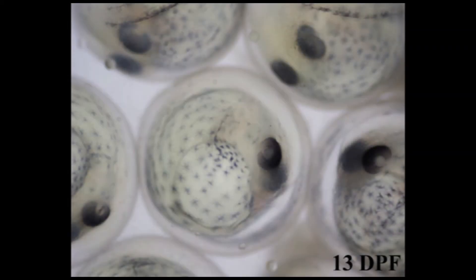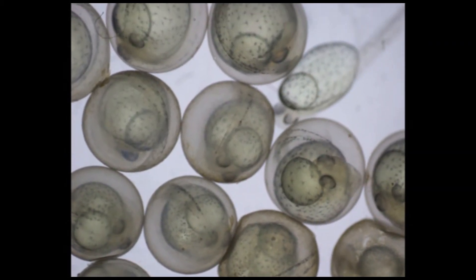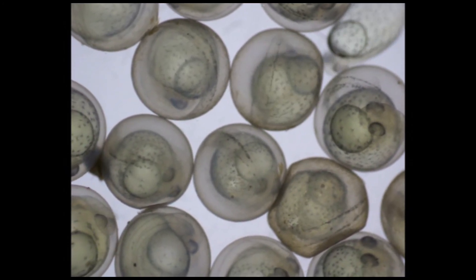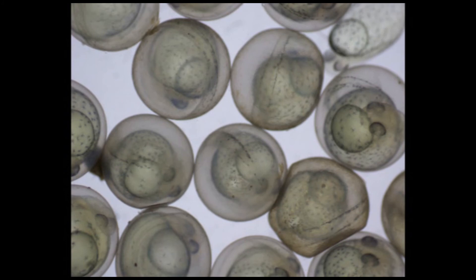At 13 days post-fertilization, the walleye are getting ready to hatch. At this stage, any formalin treatments must stop to not harm the developing walleye. Eggs become very dark black colored and much movement is happening inside the egg. This stage is referred to as hard-eyed and hatching will begin to occur in the following days.